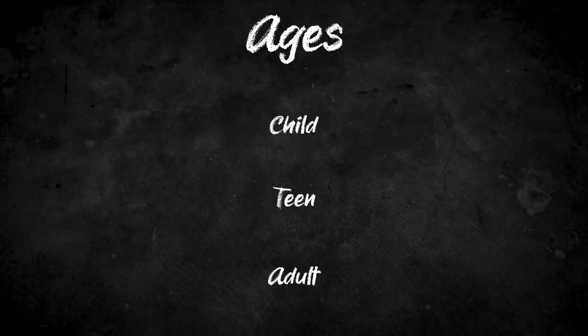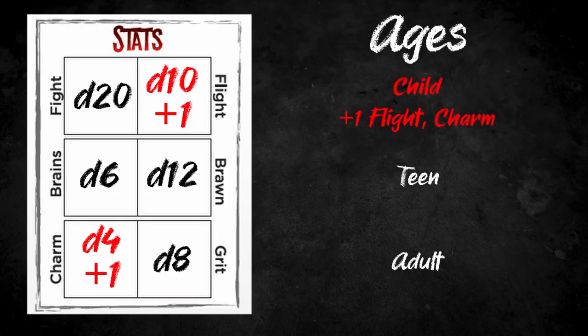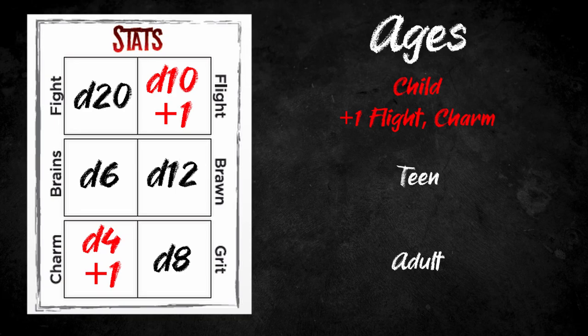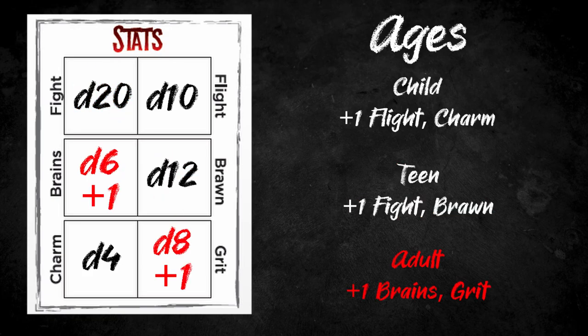Your character can be a child, a teenager, or an adult. The age that you choose not only has social ramifications, but actually affects your statistics and gives you a certain strength. Children will add plus one to their Flight and Charm checks. Teens will add one to their Fight and Brawn checks. And adults will add one to their Brains and their Grit.